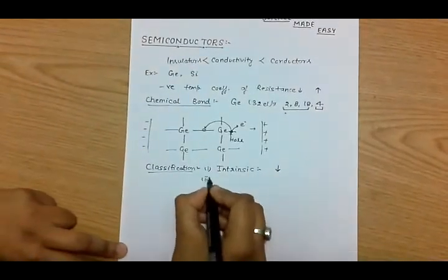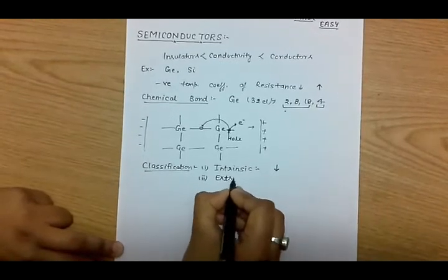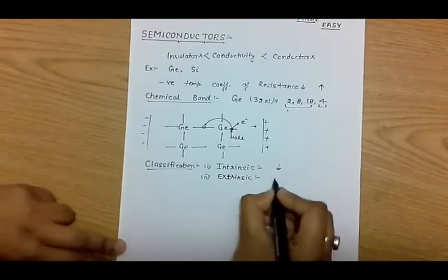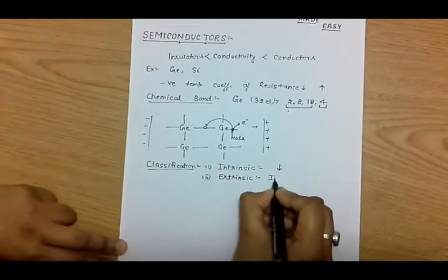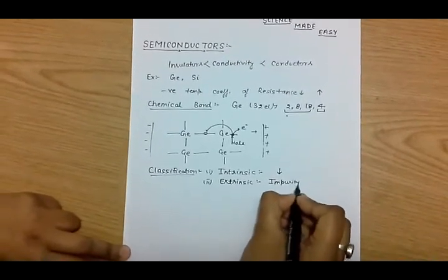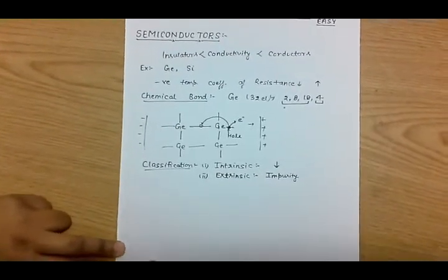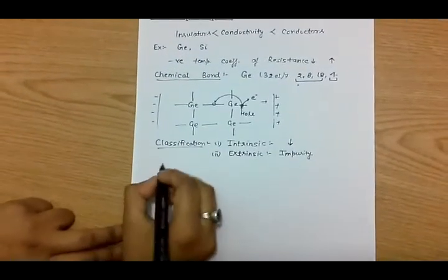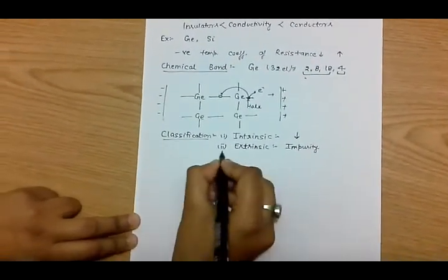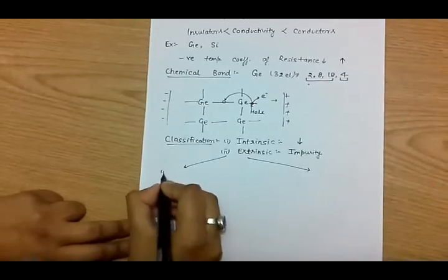The second type is the extrinsic semiconductor material. Extrinsic semiconductor materials are those in which impurity is added to change the conductivity of the material. Based upon the impurity added, extrinsic semiconductor materials are classified into two types.